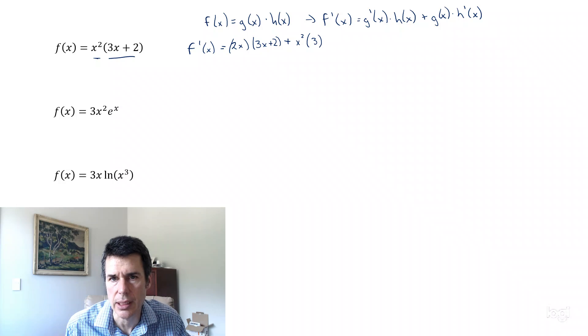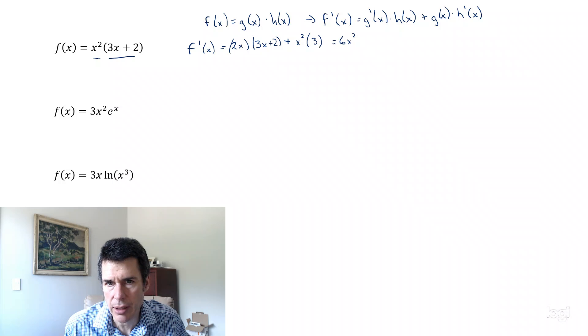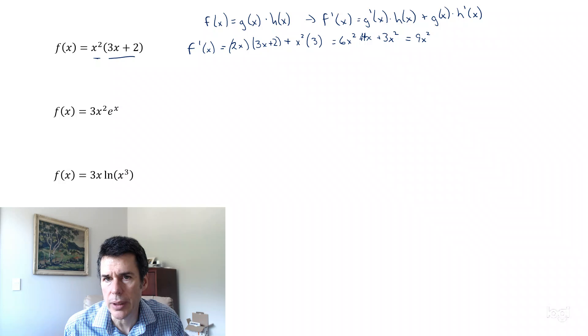which is just 3. So that's equal to 6x squared plus 4x plus 3x squared, which equals 9x squared plus 4x.